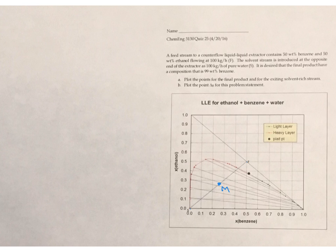The next part of the problem says that the desired final product is going to be 99% benzene. So benzene is across the bottom axis, 0.99, it's going to be along this curve for the light layer, and over here. So I've marked the point for what will become my raffinate.